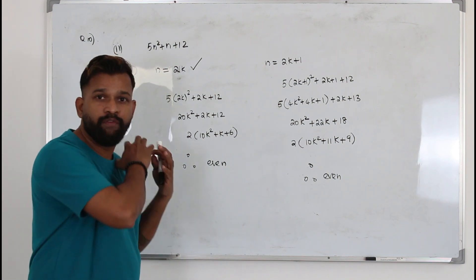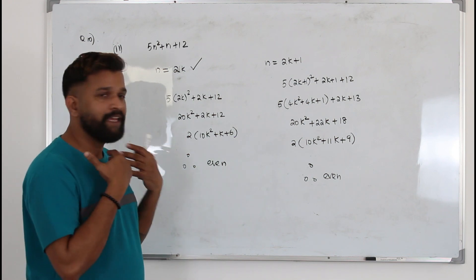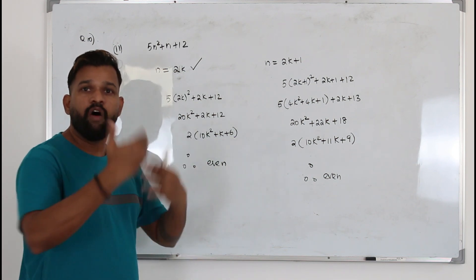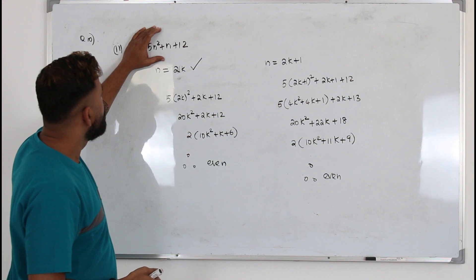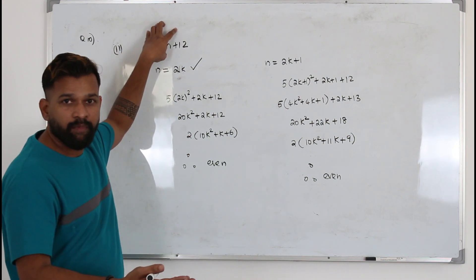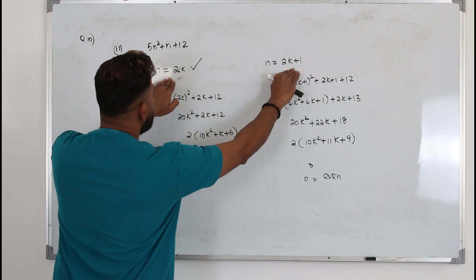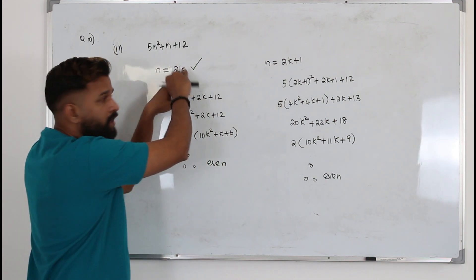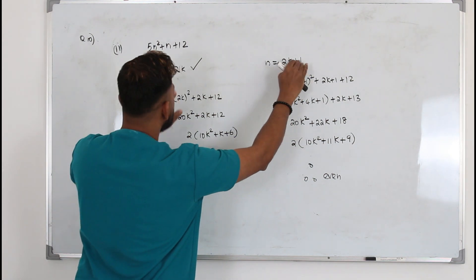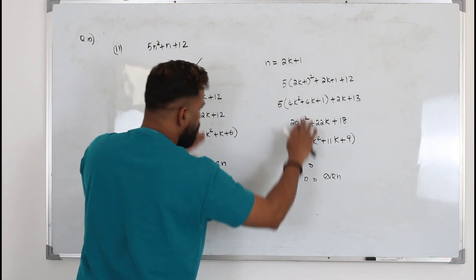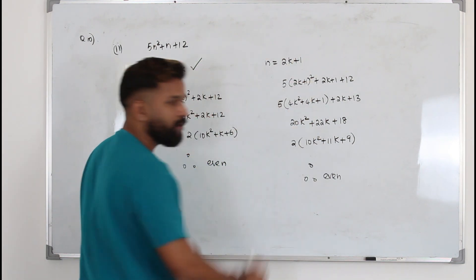You have to prove it for all integers. So it is not possible to take all the integers and prove this expression will give you an even number. That's why you need to take even and odd separately. The general expression for even is 2k, for odd number is 2k plus 1. Plug in here and prove this will produce an even number.